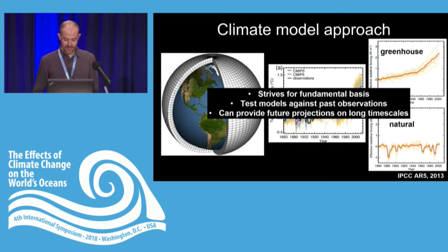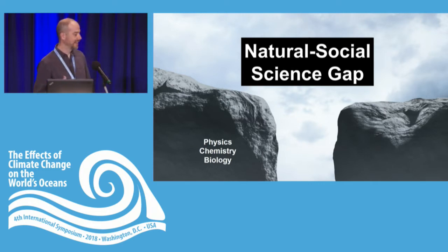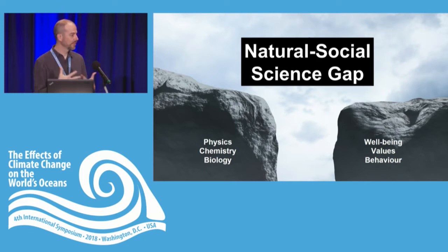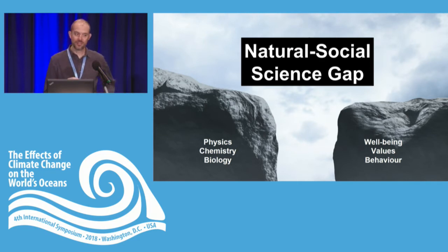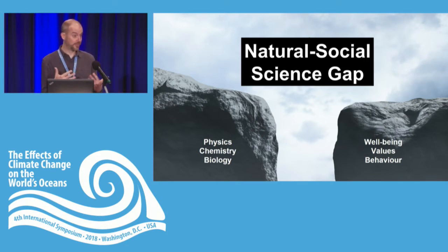As we've already heard this morning, in trying to do this, you run into this gap between the natural and social sciences — between the people who study the biology, physics, and chemistry on the natural science side, and the people who study humans, who are based more on well-being, human values, and behavior. Bringing those things together is extremely challenging because they start from fundamentally different assumptions and approaches. I really feel this gap between the natural and social sciences is the most important problem we have to tackle.